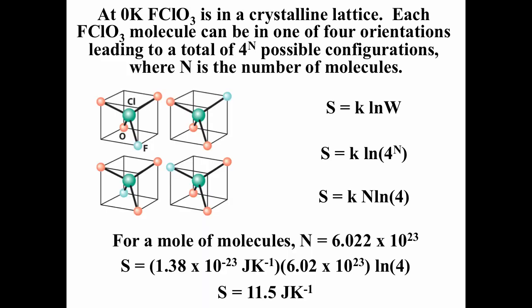In a more interesting example, we have chlorine in the center bound to three oxygens and a fluorine in a tetrahedral arrangement, so the fluorine could be in any of four positions — each molecule has four possible configurations. For N molecules, the number of configurations is four to the power of N. The natural log of four to the N brings N out in front, giving S equals k times N times natural log of four. For one mole of molecules, that gives k times Avogadro's number times natural log of four, which equals 11.5 J/mol·K.